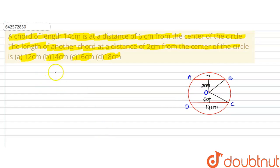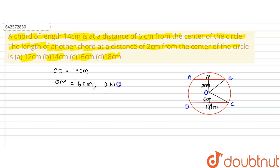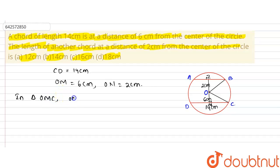CD is equal to 14 centimeters. Let M be the midpoint of CD and N the midpoint of AB. So OM is given as 6 centimeters and ON is given as 2 centimeters. The perpendicular from the center to the chord meets at a 90-degree angle.